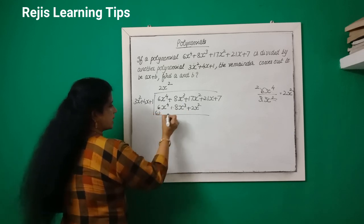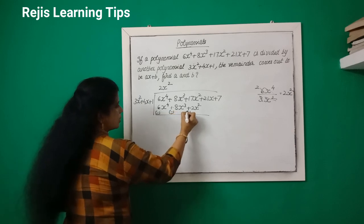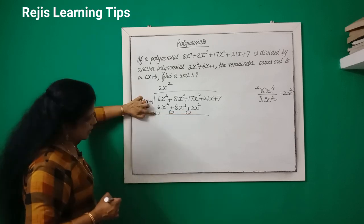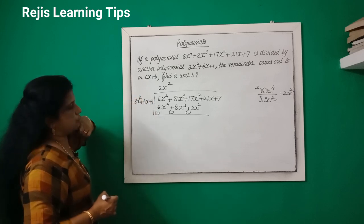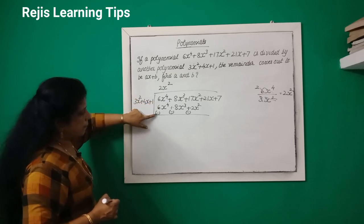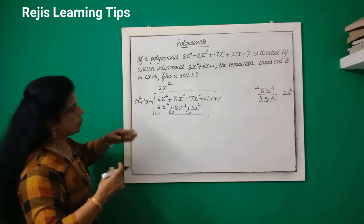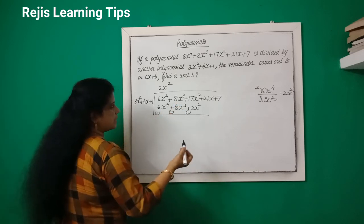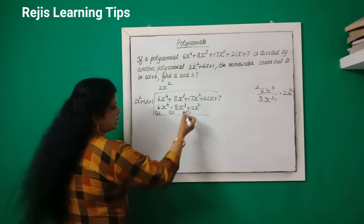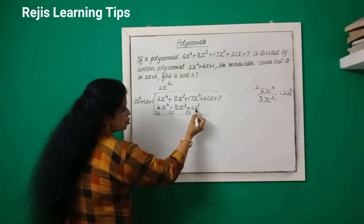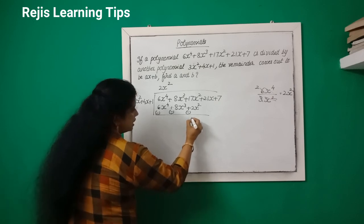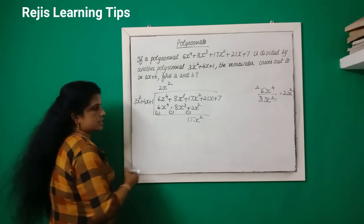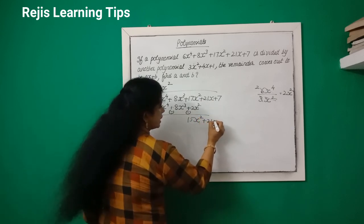We write negative signs for subtraction. So 6x⁴ minus 6x⁴ equals 0. Then 8x³ minus 8x³ equals 0. Then 17x² minus 2x² gives 15x². Bringing down, we have 15x² + 21x.